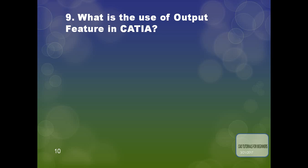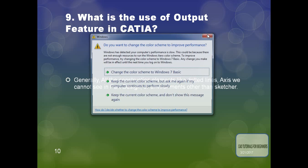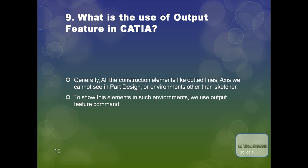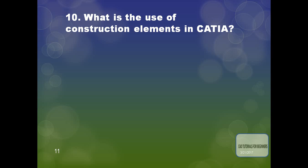The next question is: what is the use of the output feature in CATIA? Generally, all construction elements like dotted lines and axes cannot be seen in part design or environments other than sketcher — that is, in 3D we cannot see dotted lines. Sometimes it is necessary to see them in 3D, such as for making parting lines. To show these elements in such environments, we use the output feature command.